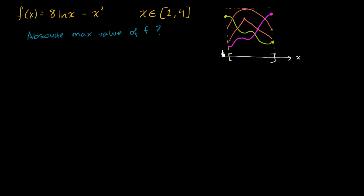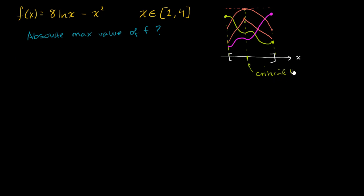So what we need to do is test the function at the beginning and end of the interval — the endpoints — and also find any points where the derivative is either zero or undefined. These points where the derivative is zero or undefined are called critical numbers.